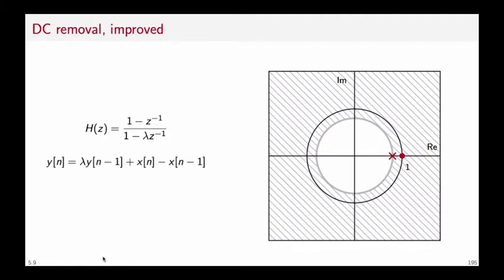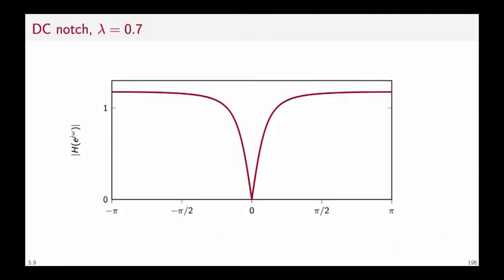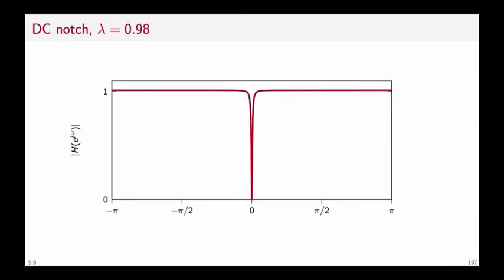In the time domain we have that the output is now lambda times the output at n minus one plus x[n] minus x[n-1]. If we plot the modified notch we obtain a characteristic that varies with different values of lambda. And as lambda grows closer to one the notch becomes more narrow. And so here for instance the example is for lambda equal to 0.98 and we have achieved a very selective DC removal.